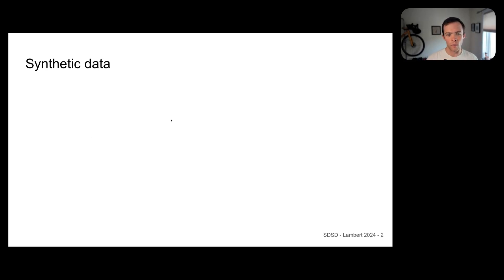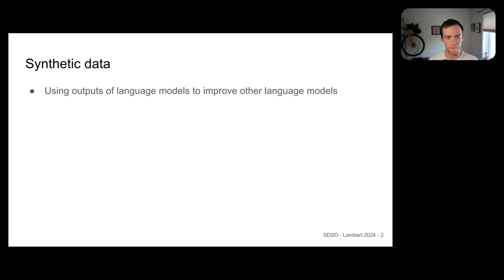So where did this project start? It's all about the coming wave that is synthetic data. What is synthetic data? It's using outputs of language models to improve other language models. There are obviously other ML models you can use to generate synthetic data with multimodal, but it's really about this feedback loop from taking the model's outputs and using that as training data.